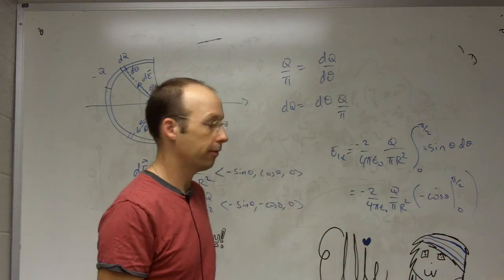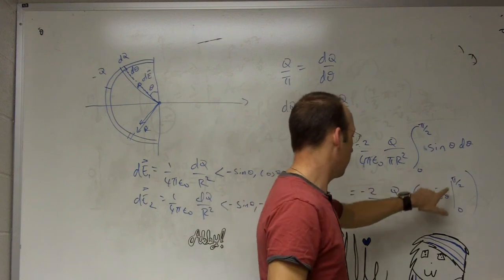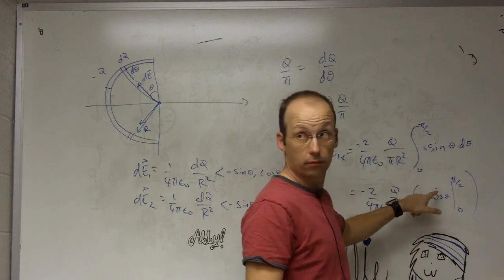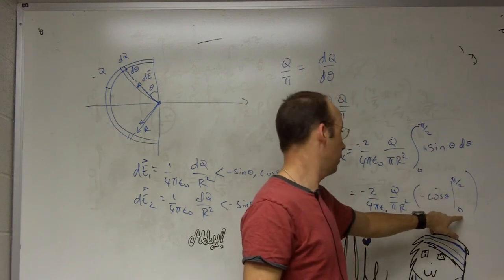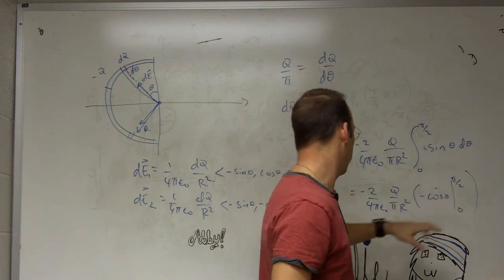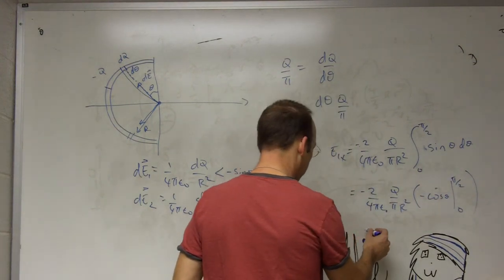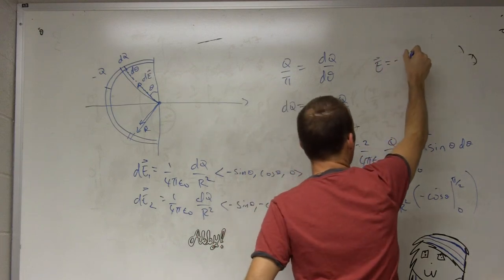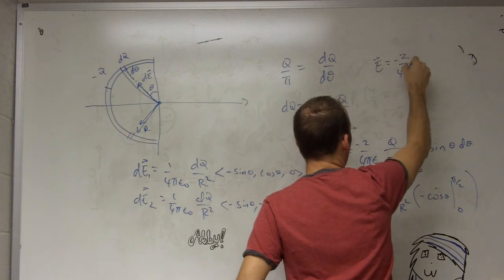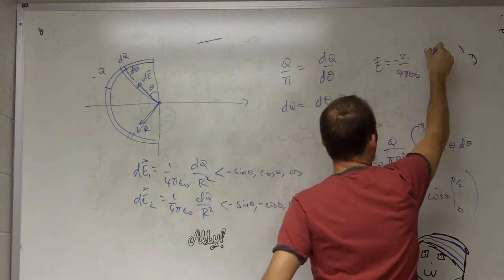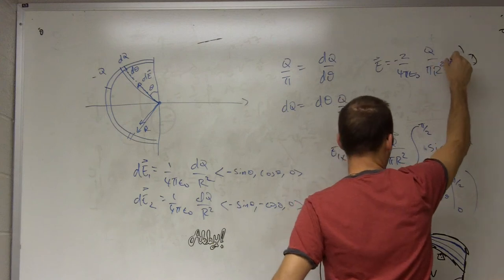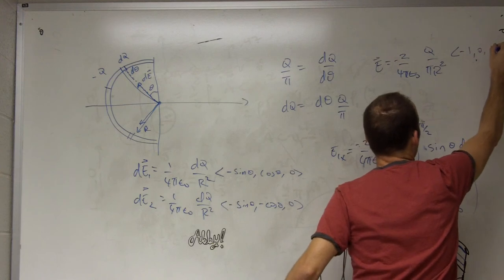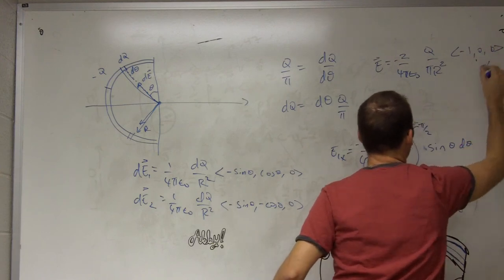Okay. It's going to work. So this is going to be cosine of pi over two is zero, minus cosine of zero, which is one. So it's going to be, this whole thing is one. So the answer is equal to, E, I can write it as a vector even. Negative two over four pi epsilon naught, Q over pi, r squared. And then I have negative one, zero, zero, newtons per coulomb or volts per meter.